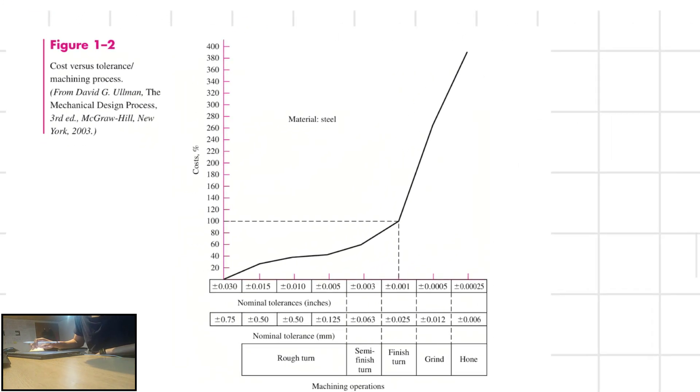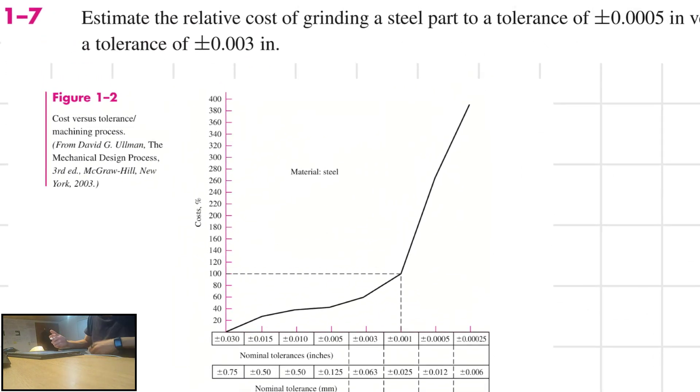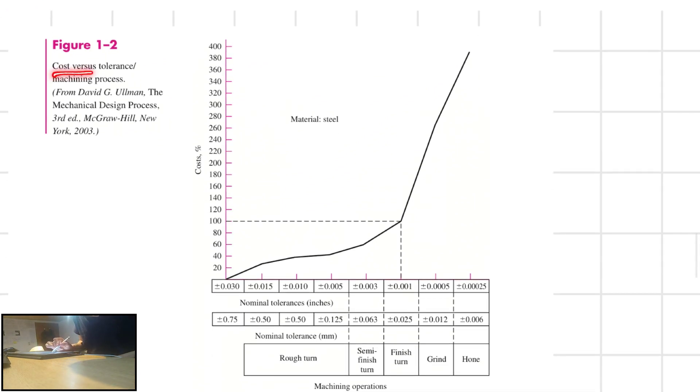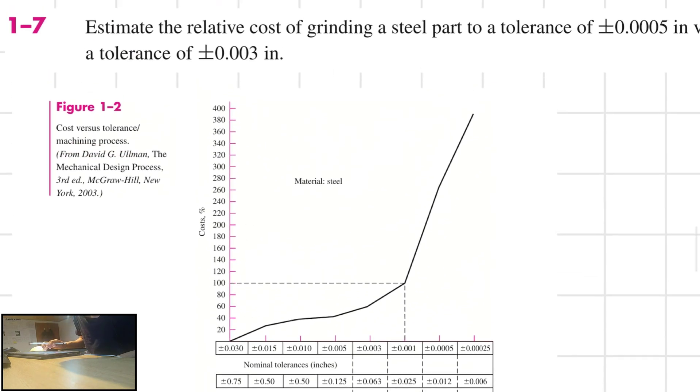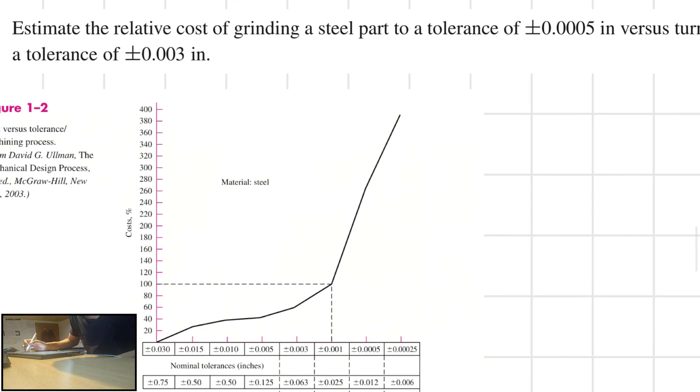All right, so all we have to do is take into account Figure 1-2, cost versus tolerance machining process, and look for the values that you are giving to me, so plus or minus, plus or minus.